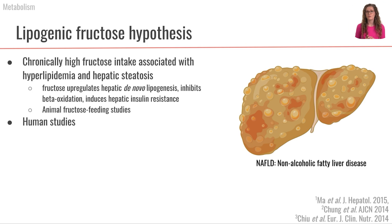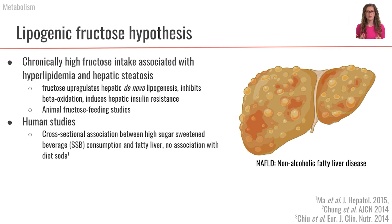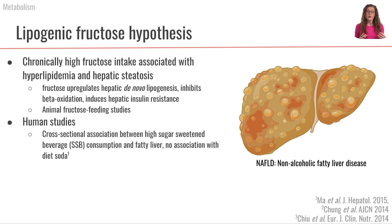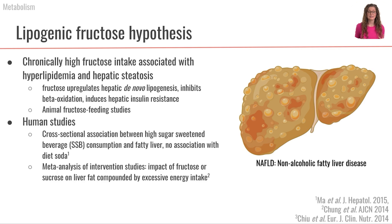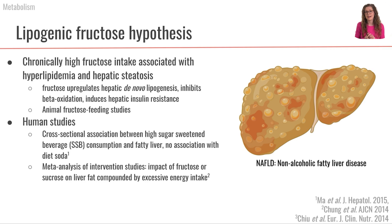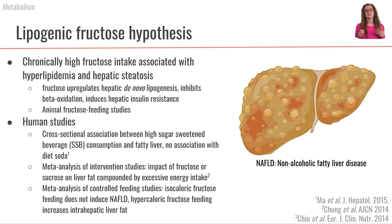Looking at human studies regarding the lipogenic potential of fructose: some cross-sectional studies show an association between high sugar-sweetened beverage intake — which contains a lot of high fructose corn syrup — and fatty liver, whereas no such association was found with diet soda. This may suggest high fructose intake from sugar-sweetened beverages could be lipogenic in the liver. However, a meta-analysis of many intervention studies found no strong impact of fructose and could not tease apart the impact of fructose versus excessive energy intake.